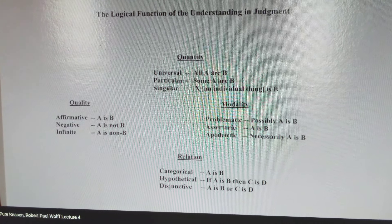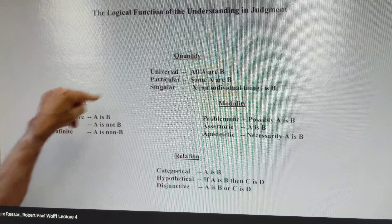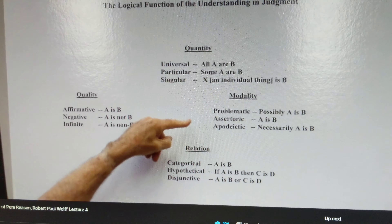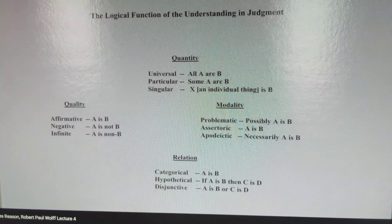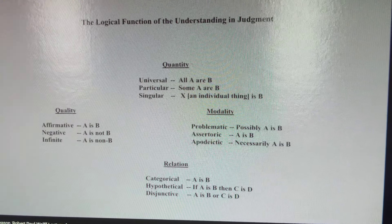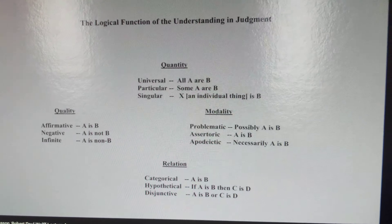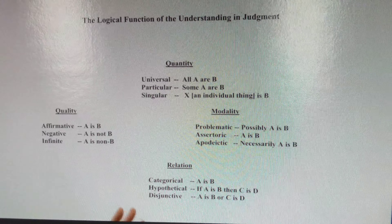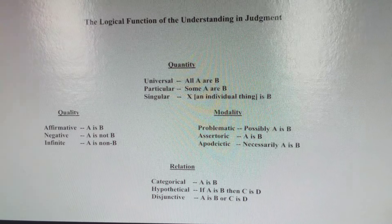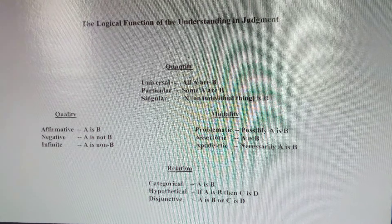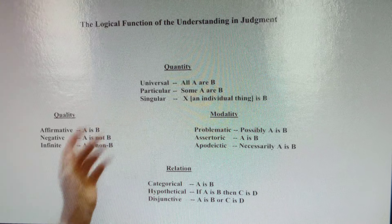For example, you could have a universal, affirmative, problematic judgment — that would be 'possibly all A are B.' Or you could have a particular negative apodictic judgment — 'necessarily no A are B.' Or you could have an assertoric, singular, infinite judgment — 'X is non-B.' There are 27 different possible combinations, three times three times three.